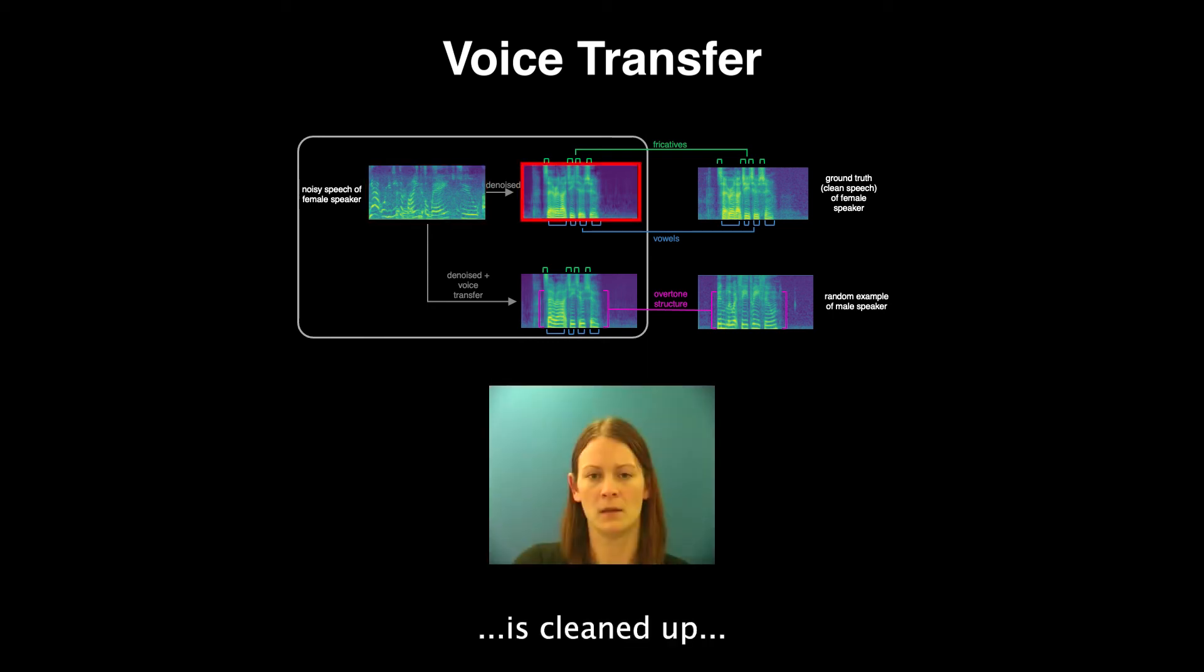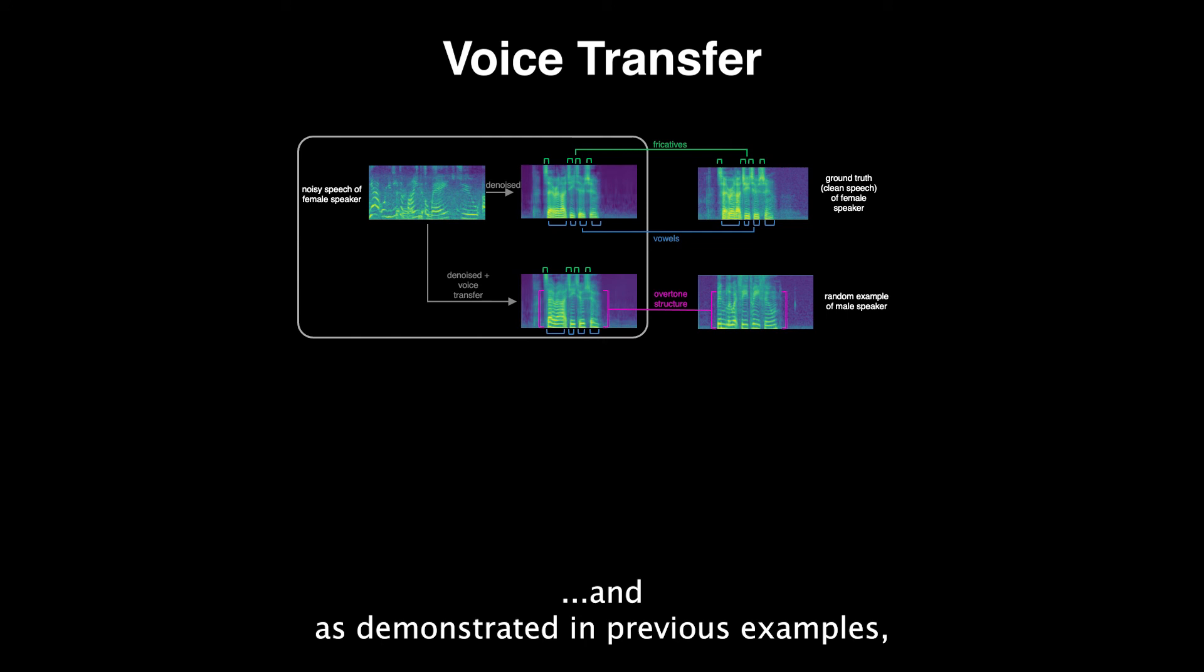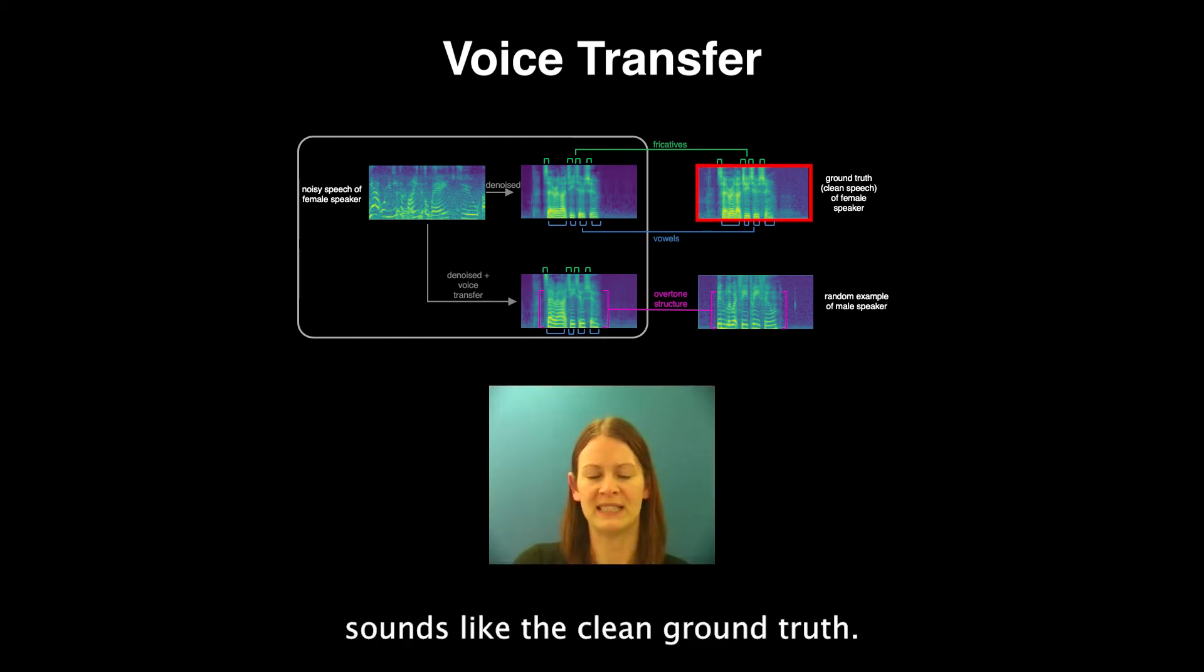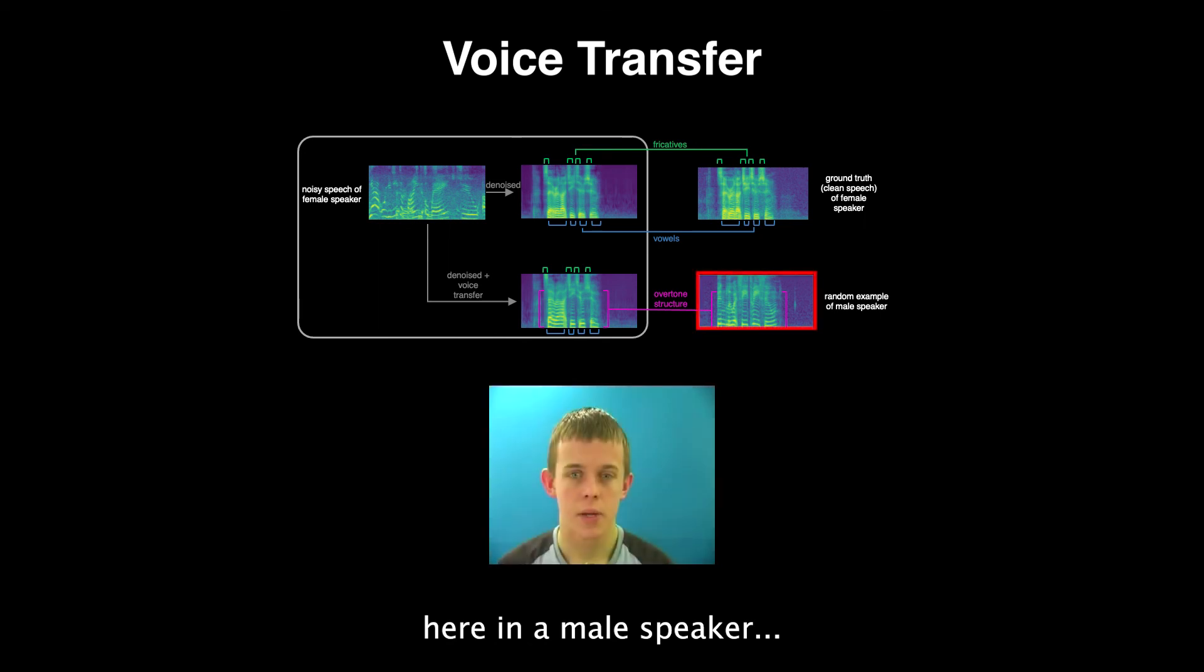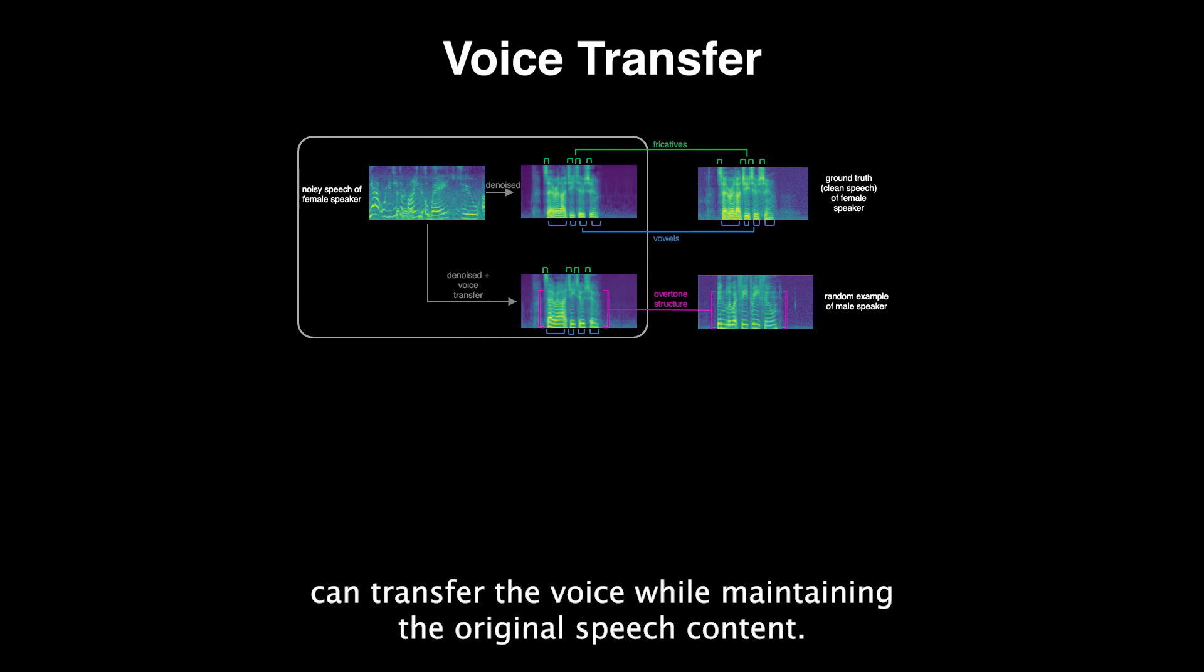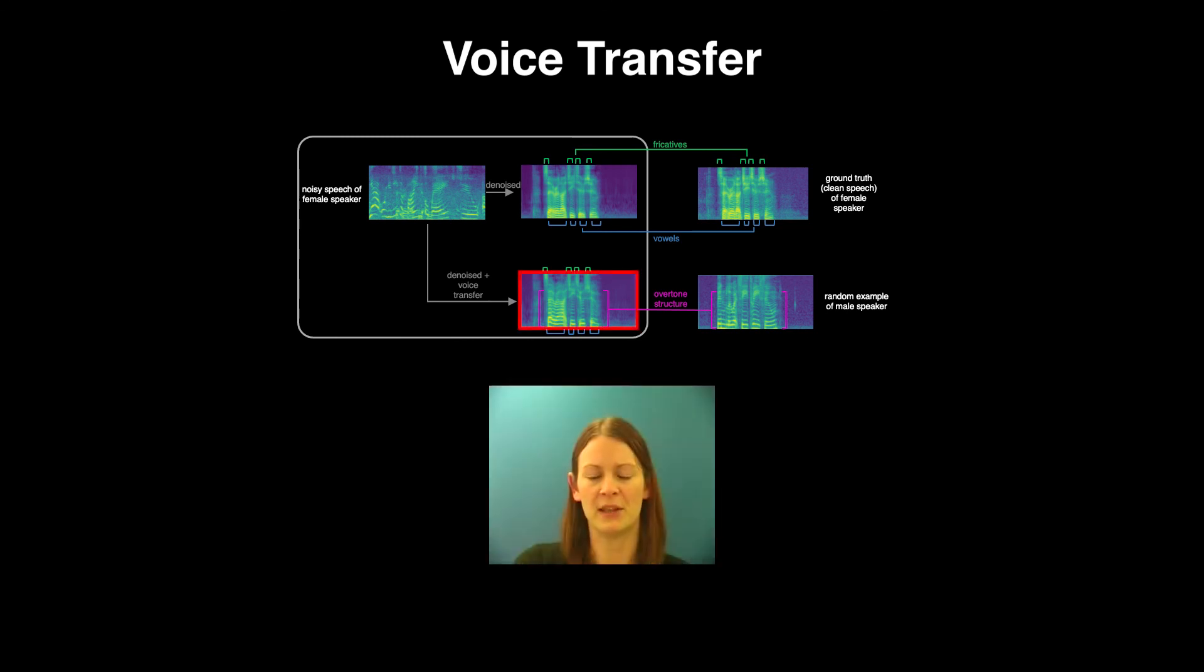...is cleaned up—been blue at C3 soon—and, as demonstrated in previous examples, sounds like the clean ground truth. Been blue at C3 soon. When additionally conditioning the decoder on a speaker embedding—hear a random male speaker—bin white by S1 soon—we can transfer the voice while maintaining the original speech content. Bin blue at C3 soon.